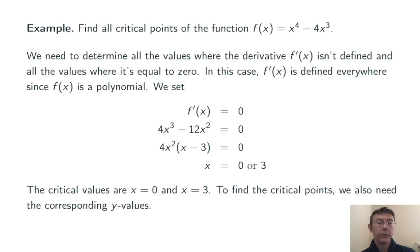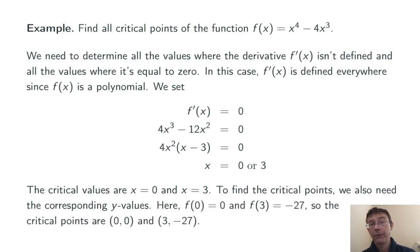To find critical points, we just need to find the corresponding y values. f(0) is 0 and f(3) is negative 27. So the critical points are (0, 0) and (3, negative 27). These are the only points where this graph can have a local maximum or local minimum.